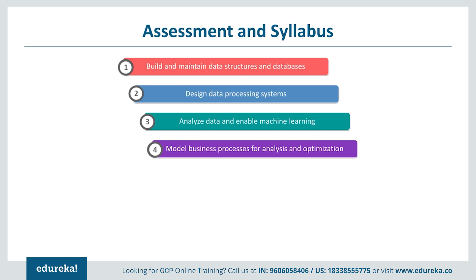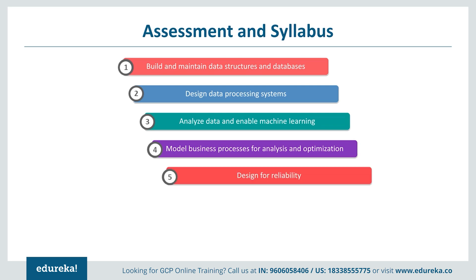Section four is modeling business processes for analysis and optimization. Responsibilities include mapping business requirements to data representation, optimizing data representation, data infrastructure and performance, cost, resizing and rescaling resources, data cleansing, distributed systems, high-performance algorithms, and common sources of errors.